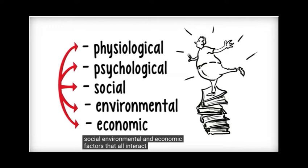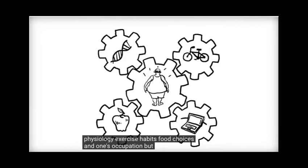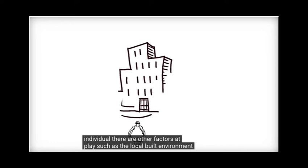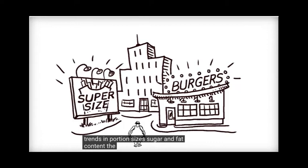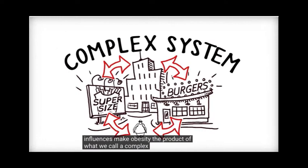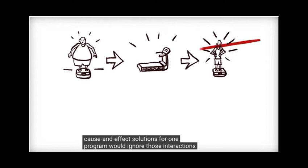Research tells us that obesity is the result of a combination of many physiological, psychological, social, environmental, and economic factors that all interact with one another. At the individual level there are issues such as human physiology, exercise habits, food choices, and one's occupation. But beyond the individual there are other factors at play such as the local built environment, quick and easy access to junk food, and larger food industry practices such as trends in portion sizes, sugar, and fat content. The interaction of all these influences make obesity the product of what we call a complex system. If Suzanne were to use a systems approach, she would realize that relying on simple linear cause and effect solutions for one program would ignore those interactions and likely fail.